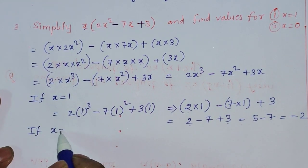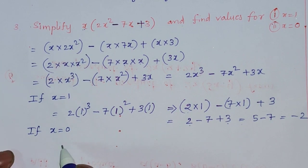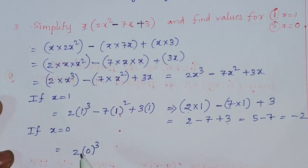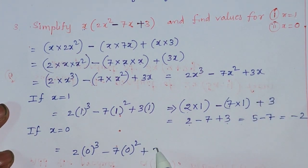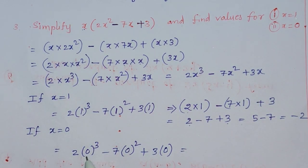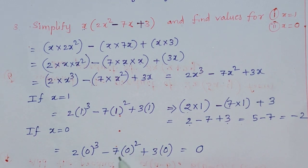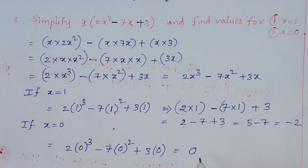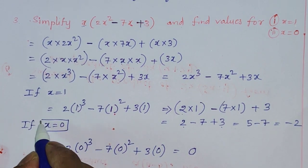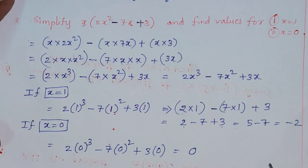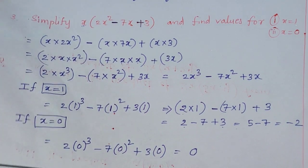Now for x equals 0: substituting into 2x cubed minus 7x squared plus 3x. We get 2 into 0 cubed, minus 7 into 0 squared, plus 3 into 0. Since 0 cubed is 0, 0 squared is 0, and 0 into 3 is 0, the whole expression equals 0 when x equals 0. So like this we can simplify and find the value of expressions for different values of x.